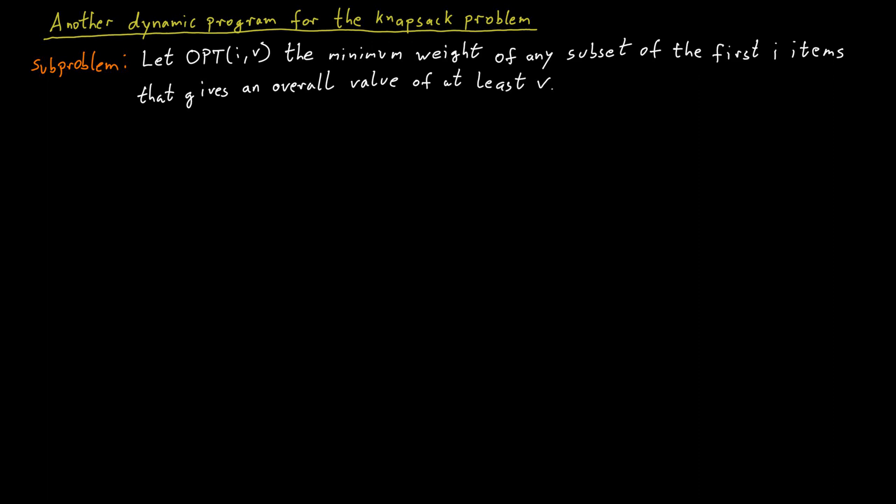As before, we can simply relate these subproblems to one another. Specifically, if we already have all the solutions for the first i minus one items, we can build up the solutions for the first i items. For the ith item, there are only two options. Either we do not select it or we select it. If we don't select it, then we have to achieve all of our value v with only the first i minus one items. So we can just look up the correct solution there and copy that.